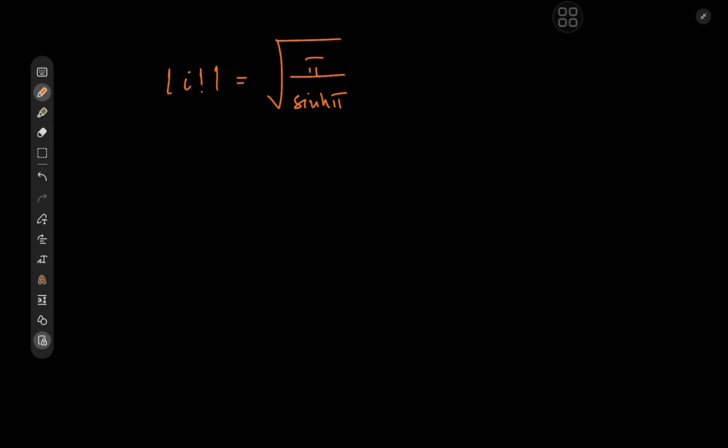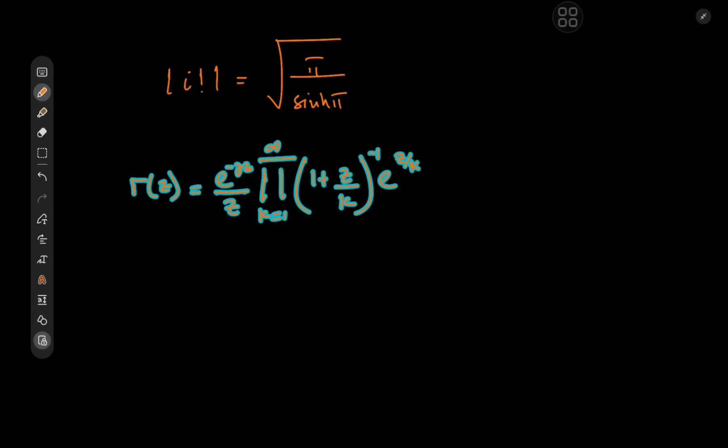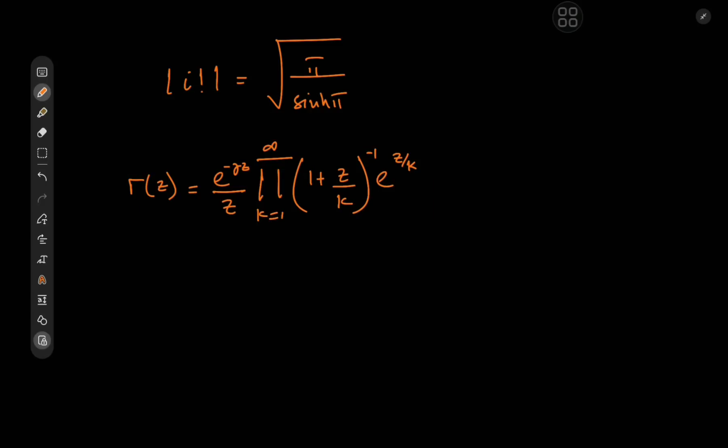So maybe we can come up with a nice approximation for it, and then see how good that approximation is, given we know the absolute value of i factorial. We could work out the absolute value of our approximation and see exactly how far from the true result we really are. For the approximation, let's make use of this infinite product form for the gamma function.